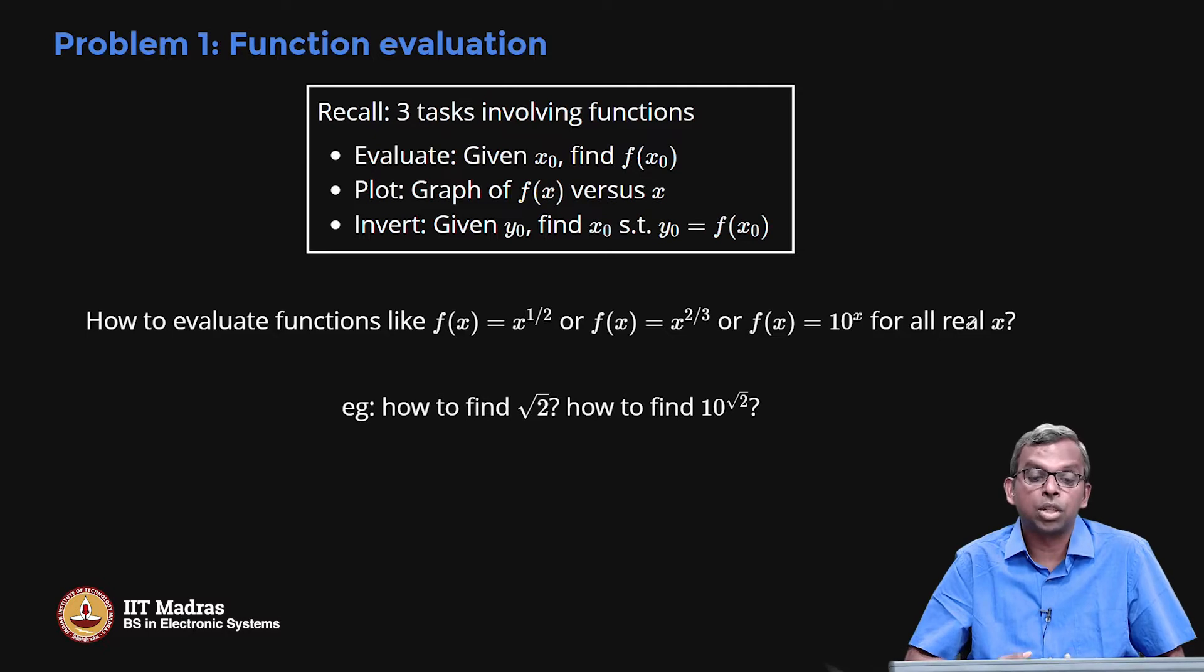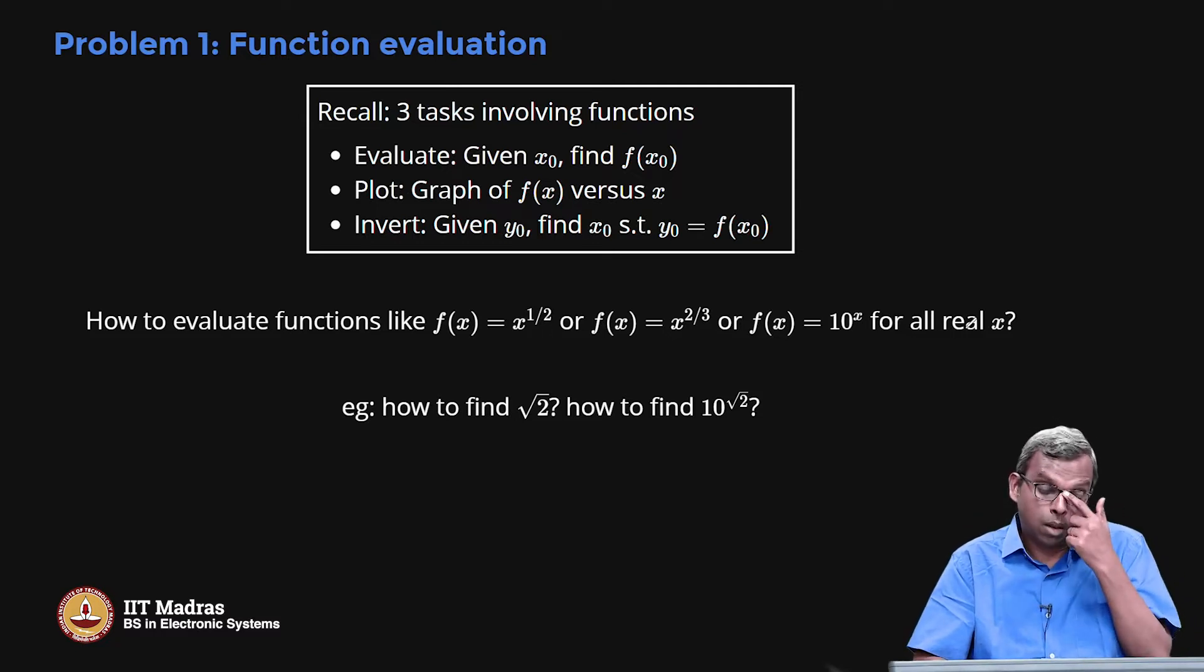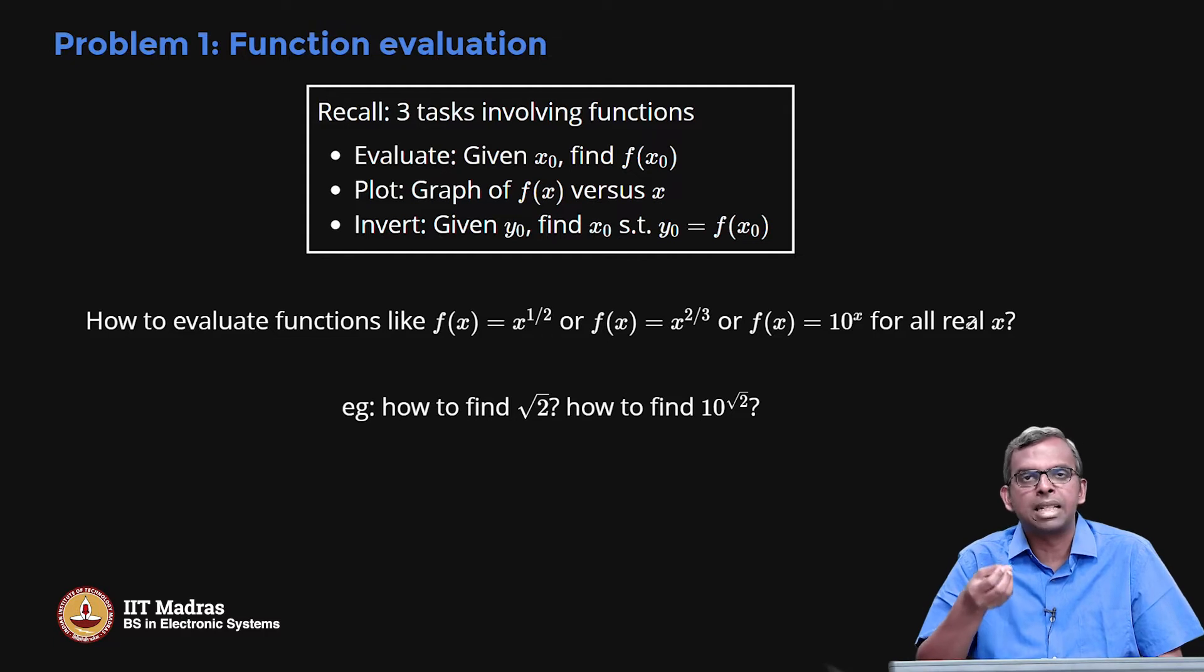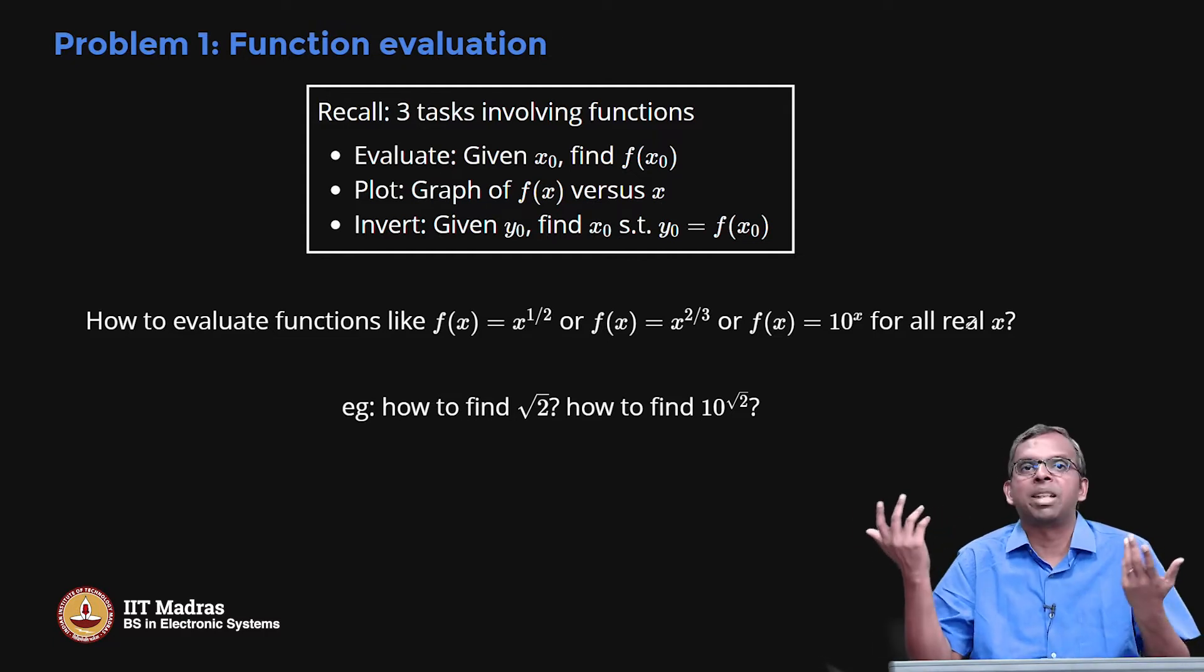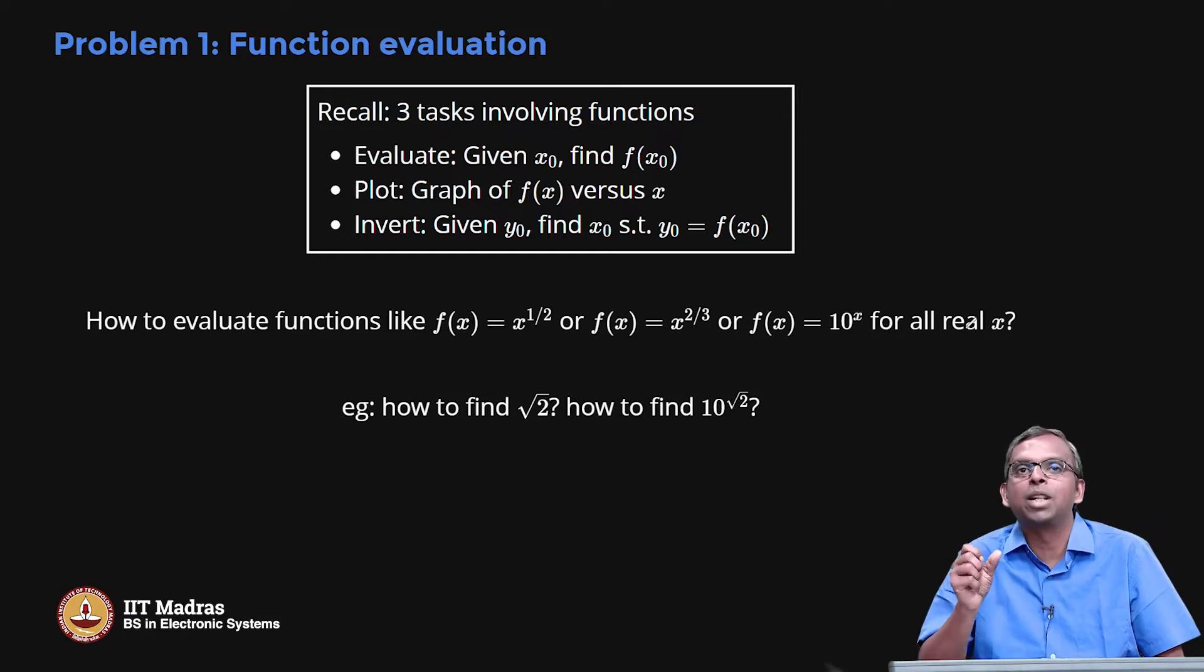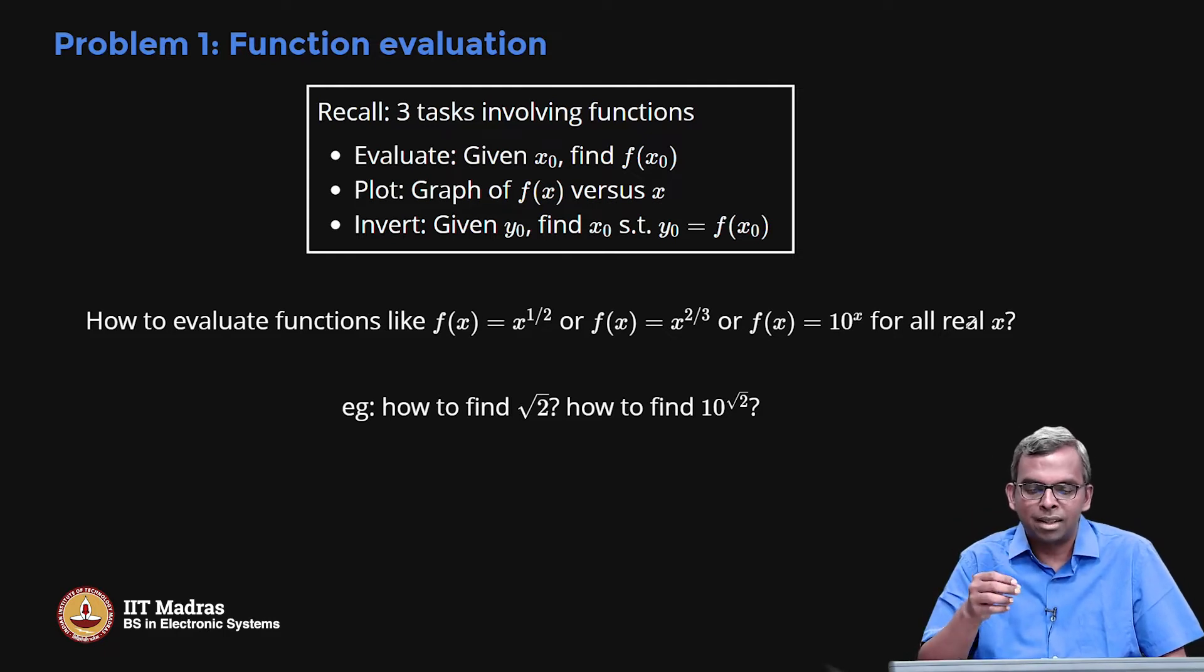Finally, we also looked at the problem of inversion. I did not call it quite inward, but basically what you are doing is you are given a y naught and then you have to find the x naught such that f of x naught is y naught. What value of x results in a particular value for the function? It is sort of like the inverse. Given x naught you find f of x naught, that is one way, but given f of x naught find x naught. That is the invert problem. These are three things you should be able to do with a function.